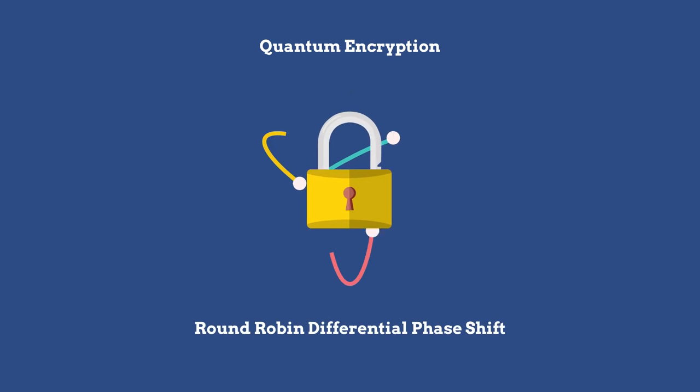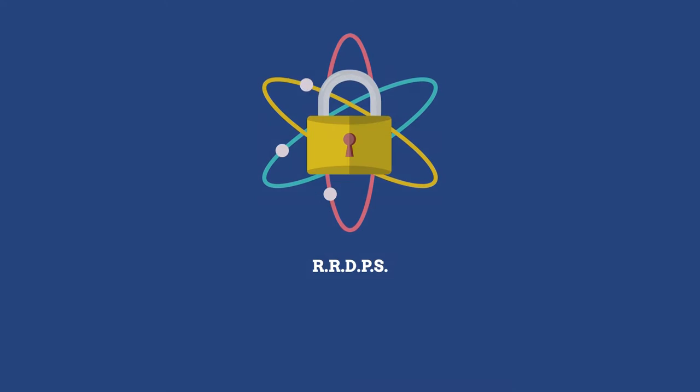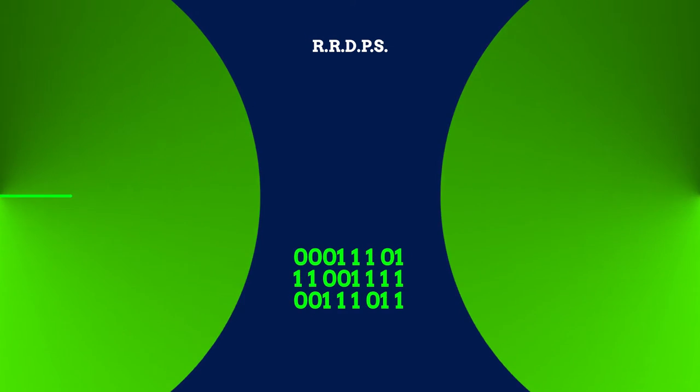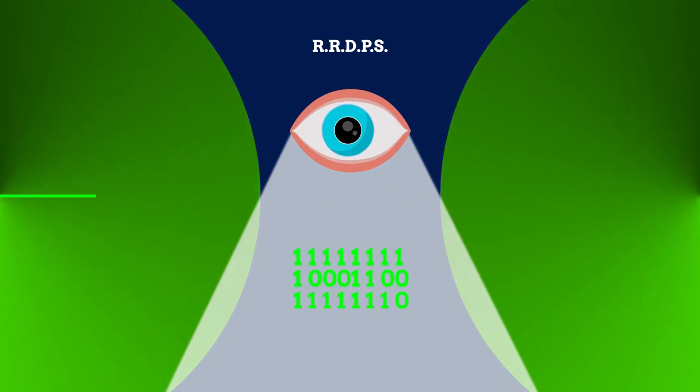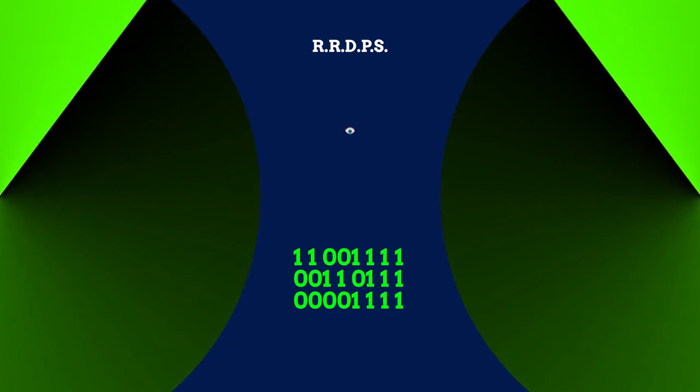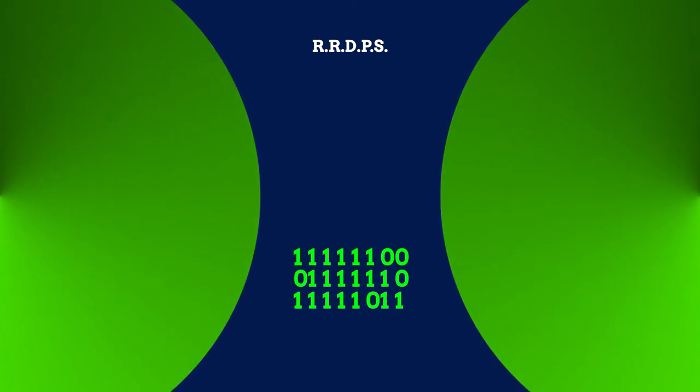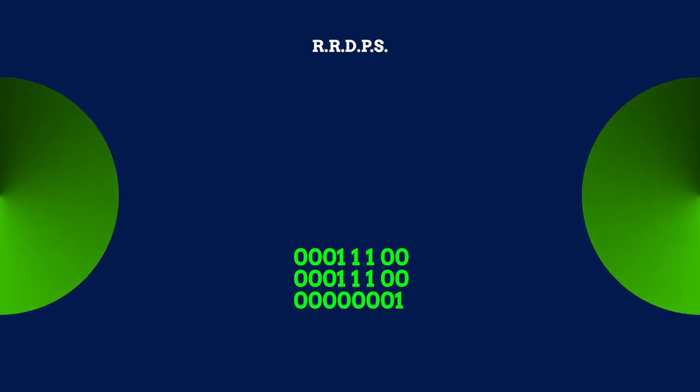Called the round-robin differential phase shift protocol, or RRDPS protocol. While conventional quantum cryptography methods are based on a system that checks for eavesdroppers, the new security protocol is based on a system in which the amount of information leaked to eavesdroppers is restricted by a fundamental principle of quantum mechanics, so that it does not require users to constantly keep an eye out for eavesdroppers.